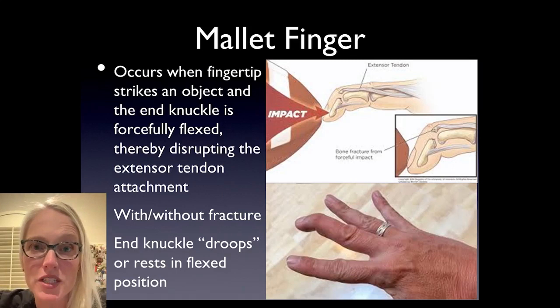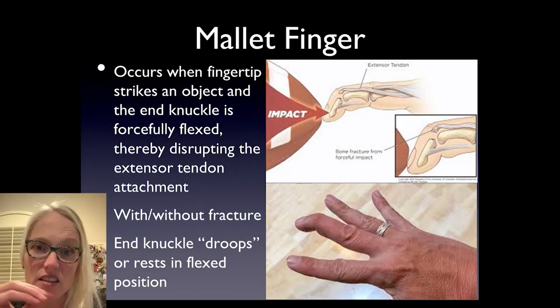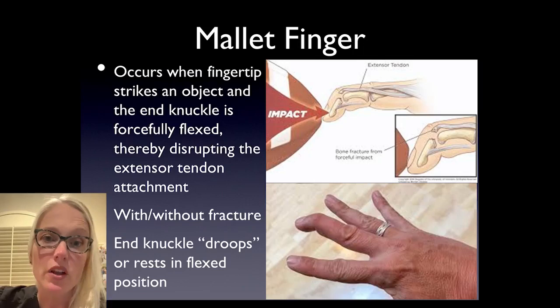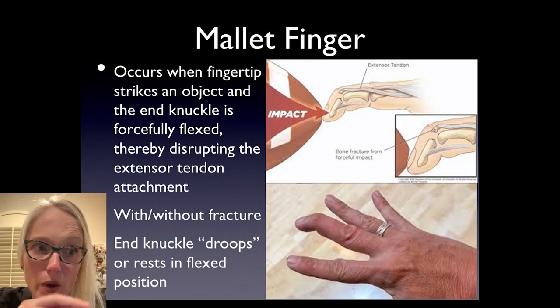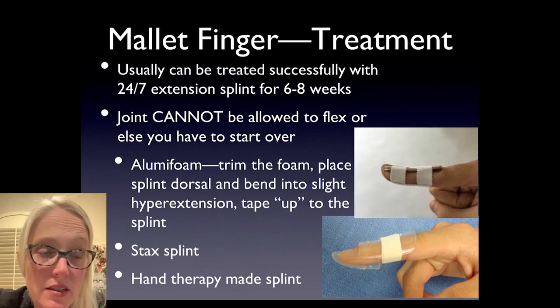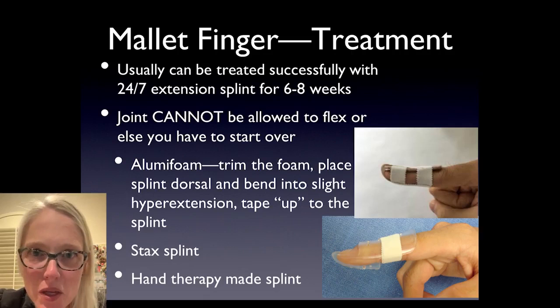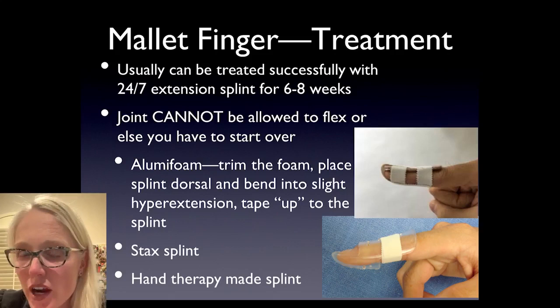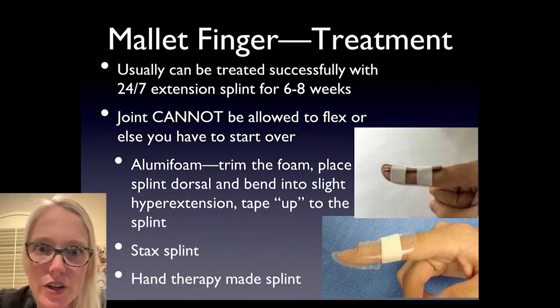One of the most common tendon-related injuries is mallet finger — I diagnosed this a ton during quarantine. When the fingertip jams into something and the end knuckle gets forced down, the extensor tendon pulls off the bone. It can occur with or without a fracture. The finger will be droopy — no matter how hard you try, you can't pull it all the way up. The tendon can pull off the bone or take a small piece of bone with it. Ninety-plus percent of mallet fingers can be treated in a splint, but you must wear it 24 hours a day, seven days a week for six to eight weeks. You cannot take the splint off to shower, and you cannot let that joint droop or flex — otherwise the clock resets and you start all over.